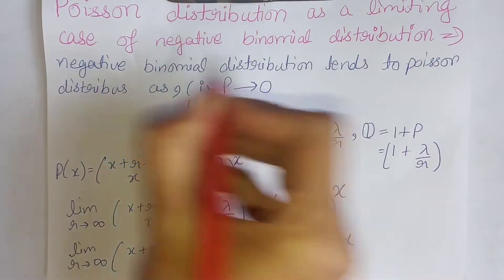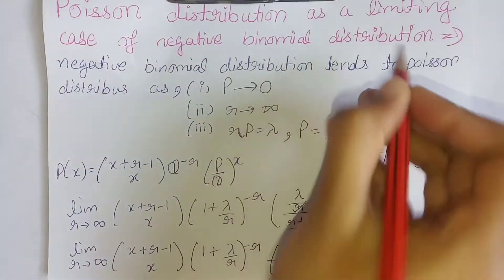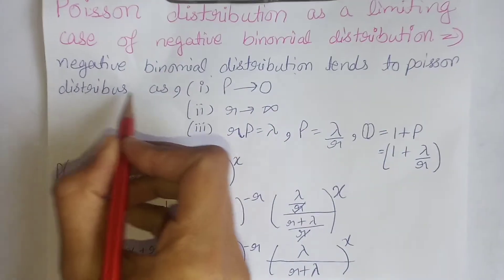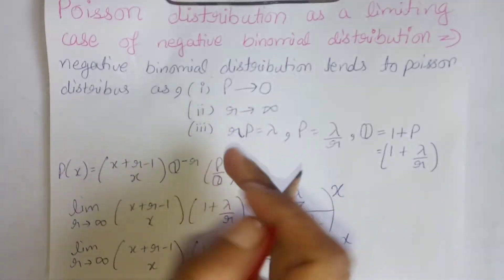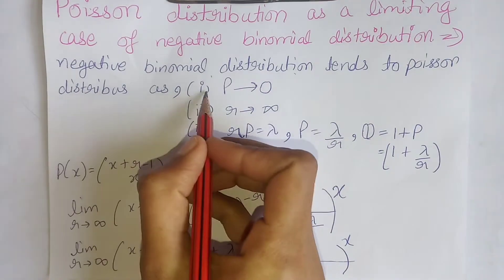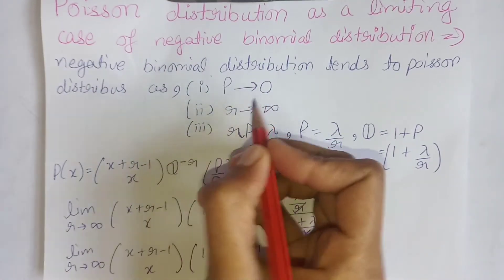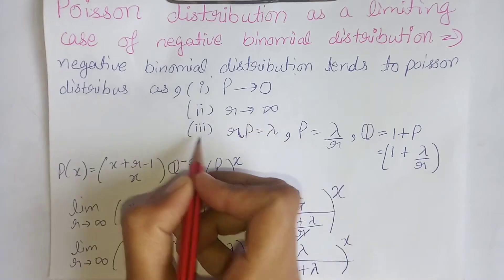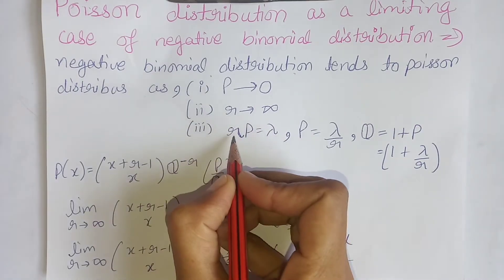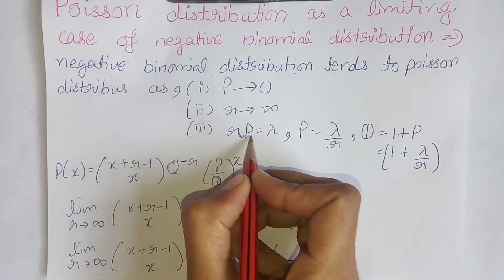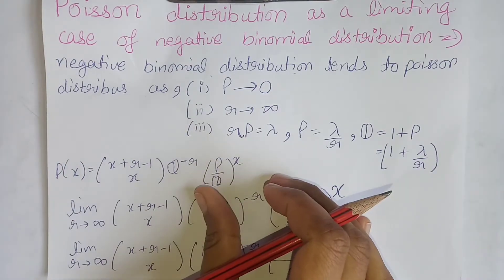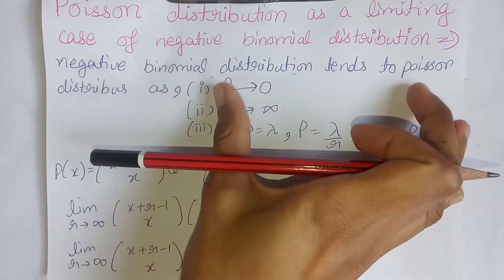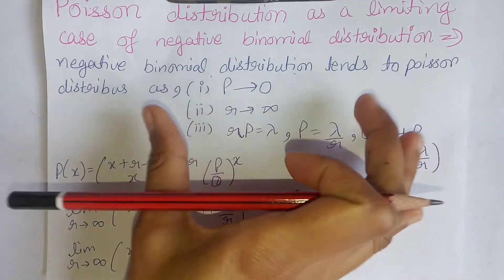Poisson distribution as a limiting case of the negative binomial distribution. The negative binomial distribution tends to Poisson distribution under three conditions: first, capital P approaches 0; second, small r approaches infinity; and third, small r multiplied by capital P equals lambda. Under these three conditions, we can derive the Poisson distribution from the negative binomial distribution.